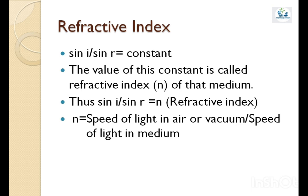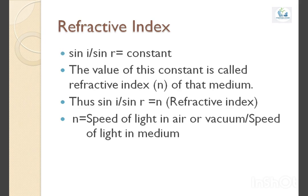The value of this constant is called refractive index of that particular medium. Thus, we can say that sin i by sin r is equal to the refractive index. There is another formula for refractive index. The refractive index can also be written as a ratio of speeds of light in the two medium, or we can say that refractive index is speed of light in air or vacuum divided by speed of light in medium. So, remember these two formulas. You will get numericals based on these two formulas of refractive index.